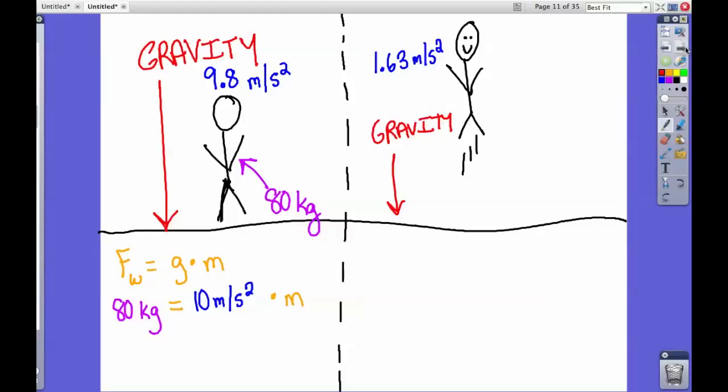If these letters are confusing, you can take out the units and just solve 80 equals 10m. This is just an algebra problem. Pretend it's an x, and you're dividing to get m by itself. Divide by 10, cancel the zeros. We know that my mass on Earth is 8 newtons.